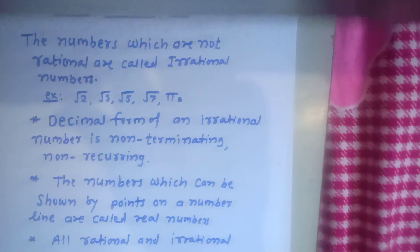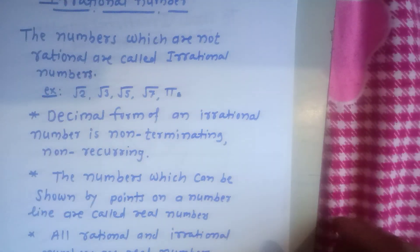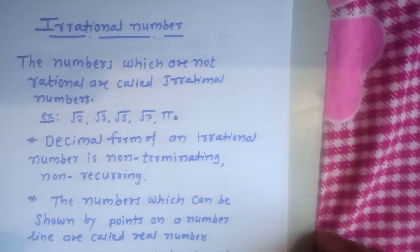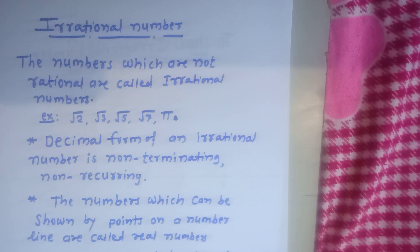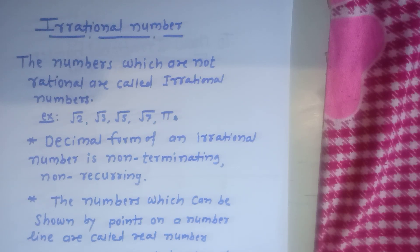Welcome friends. We have studied rational numbers. If m is an integer and n is a non-zero integer, then m upon n is called a rational number. There are different numbers on the number line. The numbers which are not rational are called irrational numbers.